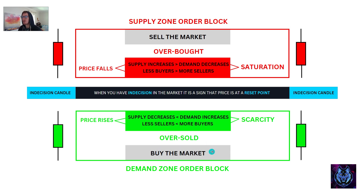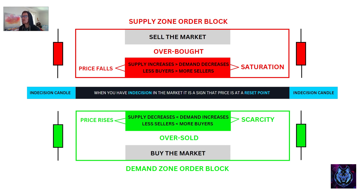On the opposite side, we've got buyers in the markets — it represents the demand zone order block. It's oversold regions. Supply decreases, demand increases, less sellers, more buyers — scarcity in the markets, price rises. The demand zone is represented by the green indecision candle. When you have indecision in the market, it is a sign that price is at a reset point, and that is why we attune ourselves to notice these indecision candles, specifically at these order block zones.